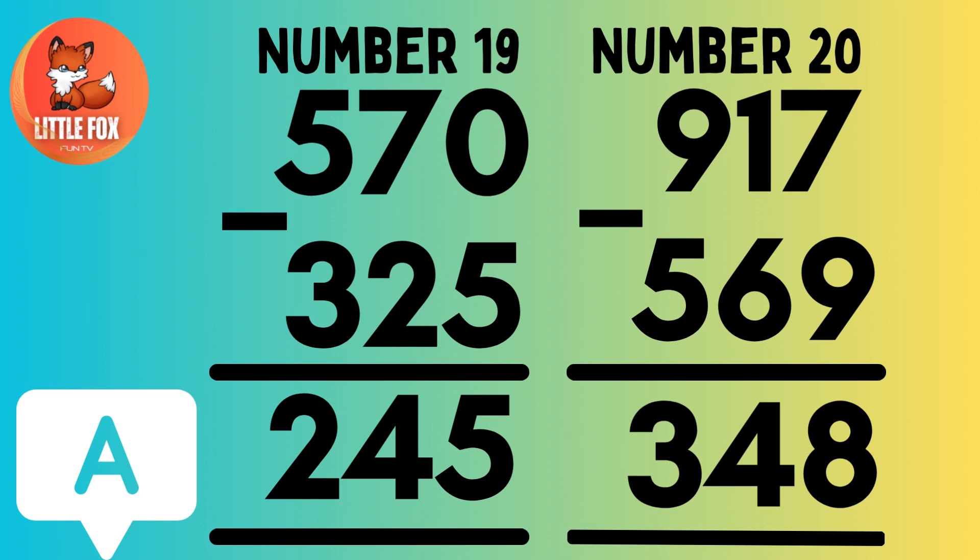Number 19. 570 minus 325 is equals to 245.